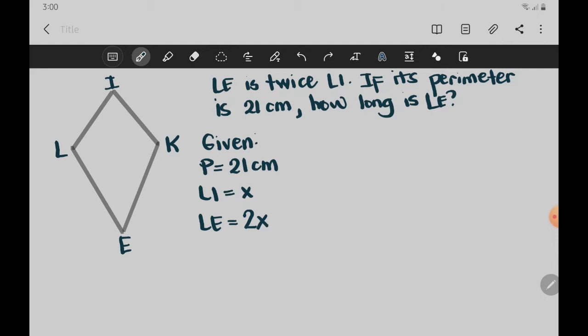So since we know that LI is X and LE is 2X, we know that they have congruent adjacent sides. So LI, congruent to it is IK, meaning if X is LI, then IK is also X. And the same goes with LE, congruent adjacent sides is KE. So if LE is 2X, then KE is also 2X.